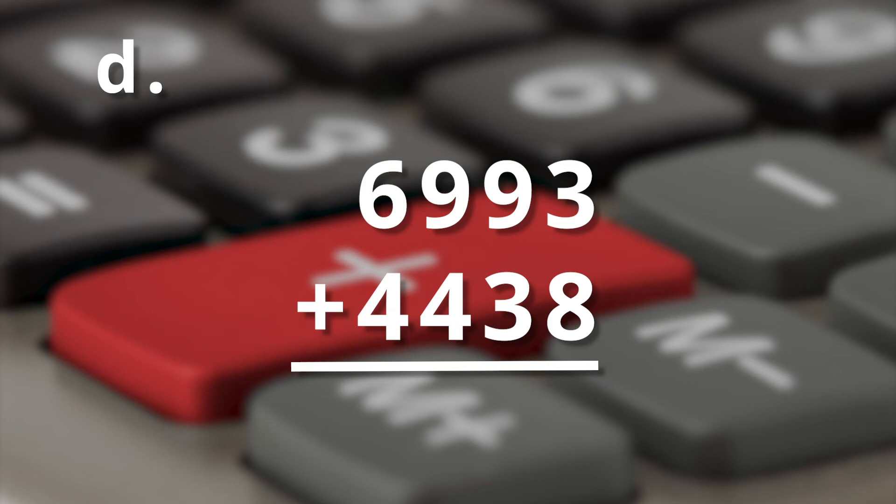Here we go. Sixty-nine ninety-three plus forty-four thirty-eight. So you've got the three plus the eight is eleven. So a one goes down in the ones column. Carry the one up to the tens column. So you have one plus nine plus three. What is that? Yep, that is thirteen.